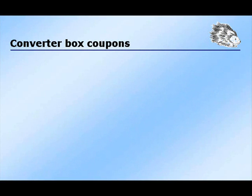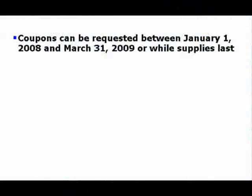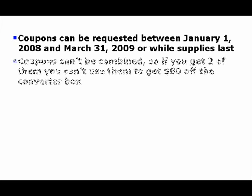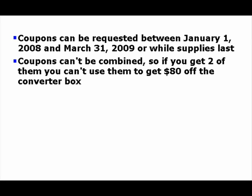Now let's talk about the coupons. The federal government is giving away coupons worth $40 towards the purchase of a digital converter box. This means that if the converter box costs $60, with the coupons it will cost $20 plus the sales tax corresponding to the original $60. The coupons will be available from January 1st, 2008 till March 31st of 2009 or while supplies last. Each household can request up to two coupons.